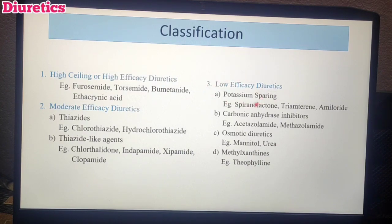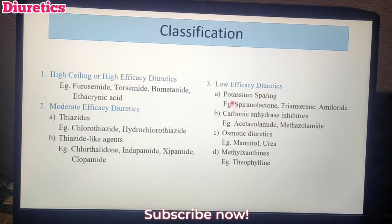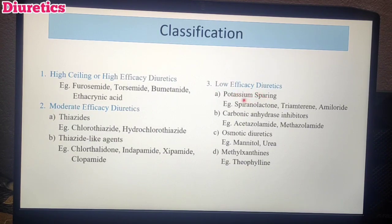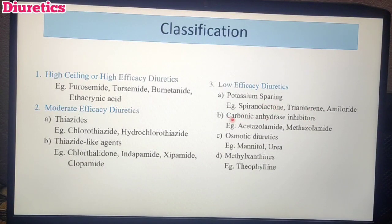Next, third category: Low Efficacy Diuretics. These drugs have a small therapeutic effect. There are four subcategories. The first is Potassium-Sparing Diuretics. When diuretics increase urine output, solutes like sodium, potassium, calcium, and magnesium are excreted — but this drug is potassium-sparing. Examples: Spironolactone, Triamterene, Amiloride.